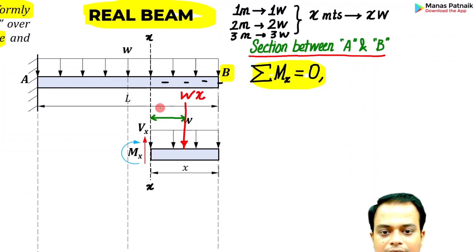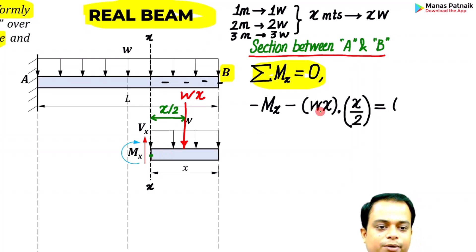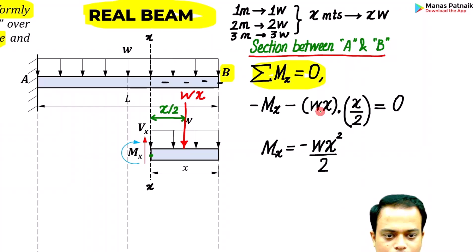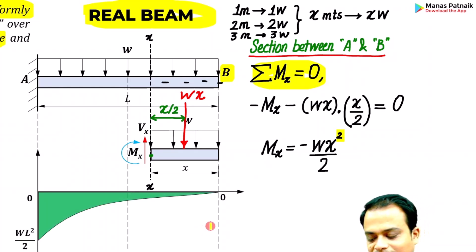Secondly, this load will be at a distance of x over 2 from this section. It's going to have a clockwise effect: wx times x by 2. Let me start with Mx, it is clockwise, so minus Mx. wx into x by 2, a clockwise moment again, minus wx into x by 2. Simplify this: you have a beautiful relationship, a sort of parabolic relationship.